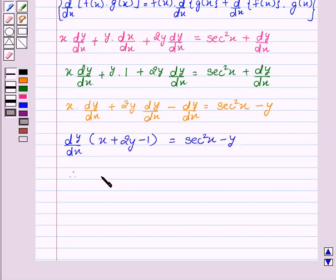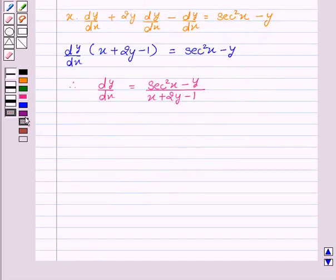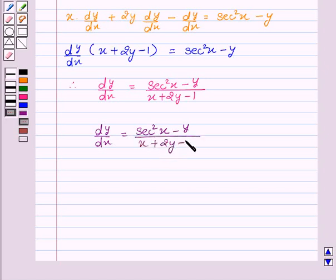Therefore dy by dx equals sec squared x minus y upon x plus 2y minus 1. Hence dy by dx equals (sec²x - y) / (x + 2y - 1), which is the required solution.